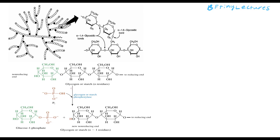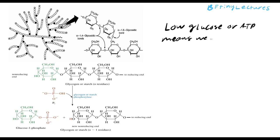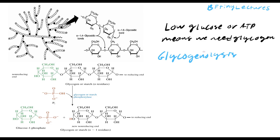When do we use glycogen? We only use glycogen whenever our ATP levels are low or when our glucose levels are low. The process of breaking down glycogen to get glucose, which is then used to create ATP, is called glycogenolysis — essentially the breakdown of a glycogen molecule for sugars.